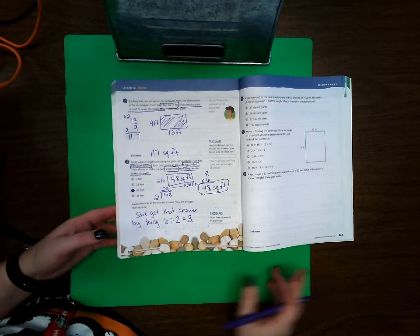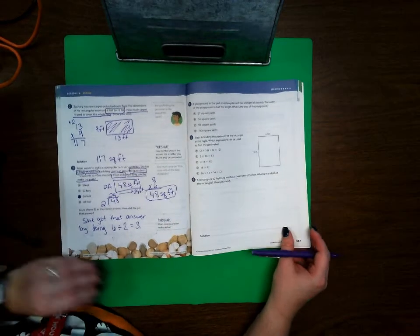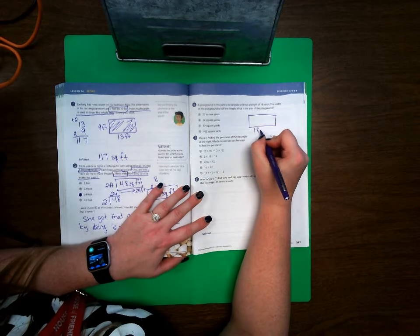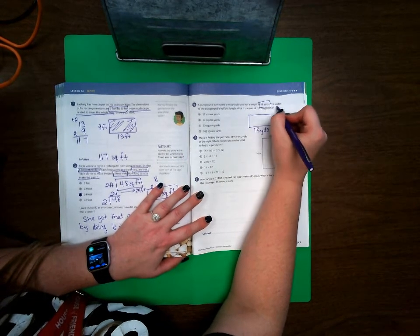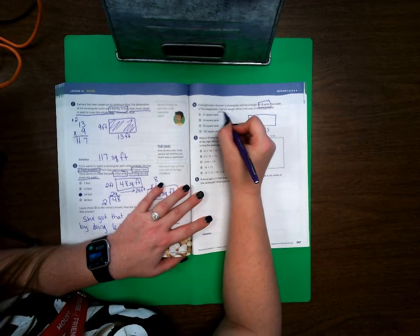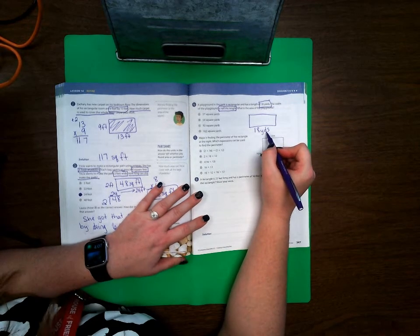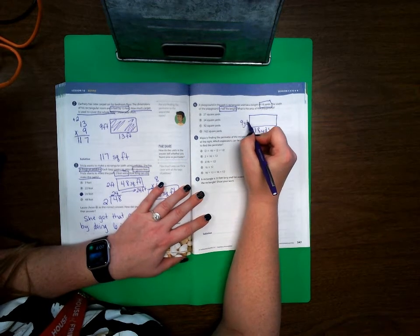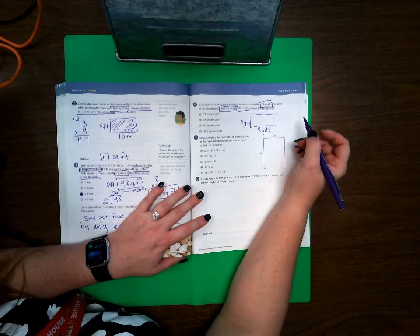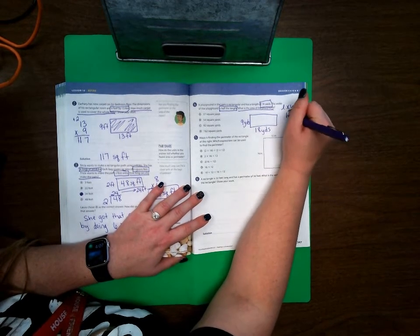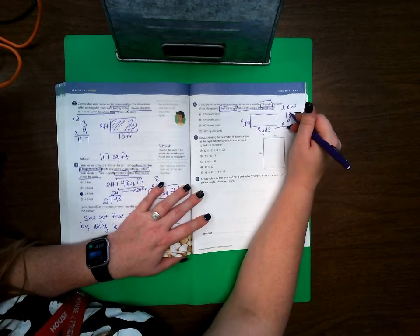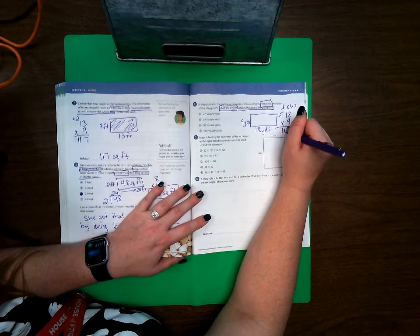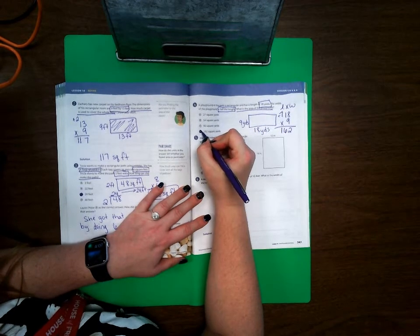Let's go ahead and turn to page 347. A playground in the park is rectangular and it has a length of 18 yards. The width of the playground is half the length. So what is half of 18? Well, if you know your double addition facts, you would know that that means it's 9 yards. What is the area of the playground? Area is length times width. So we are doing 18 times 9. 9 times 8 is 72, 9 times 1 is 9 plus 7 more is 16. So it's 162 square yards.